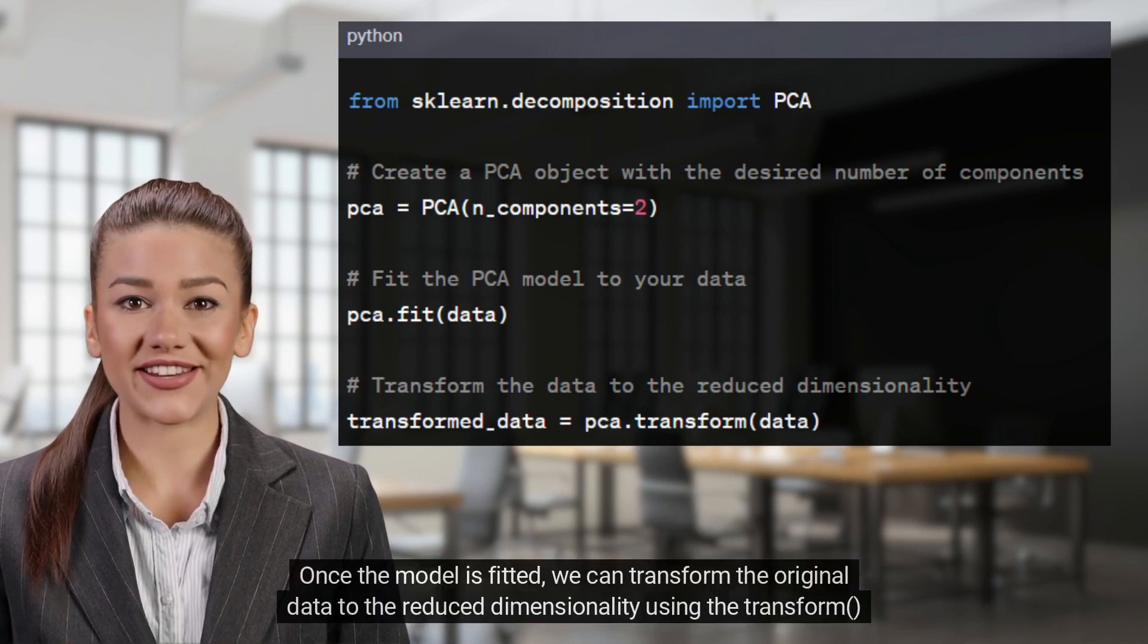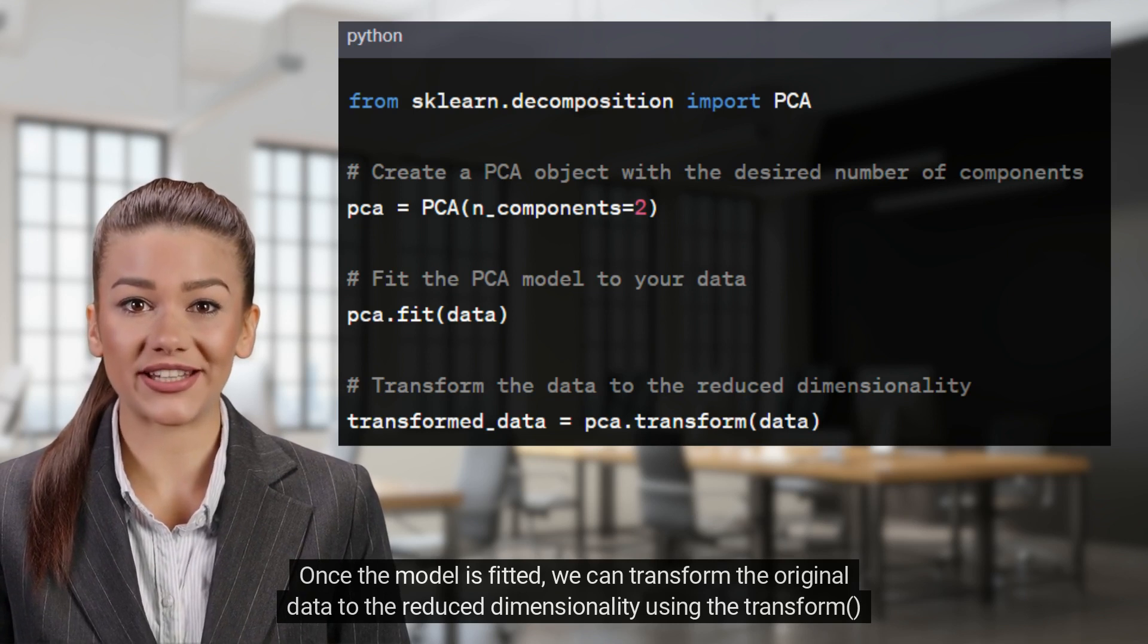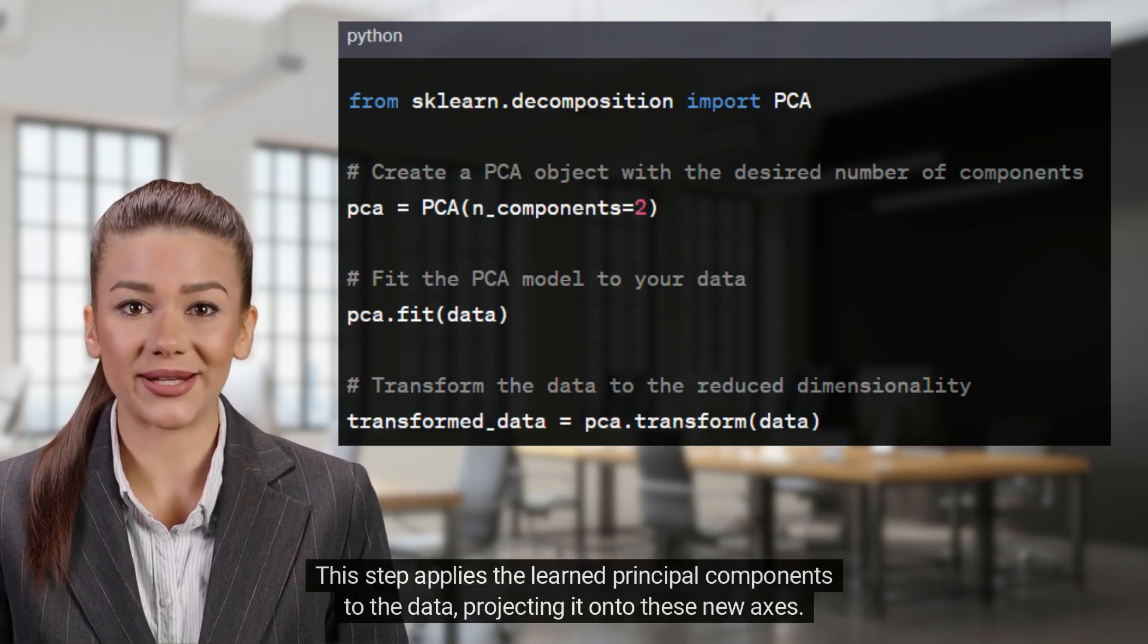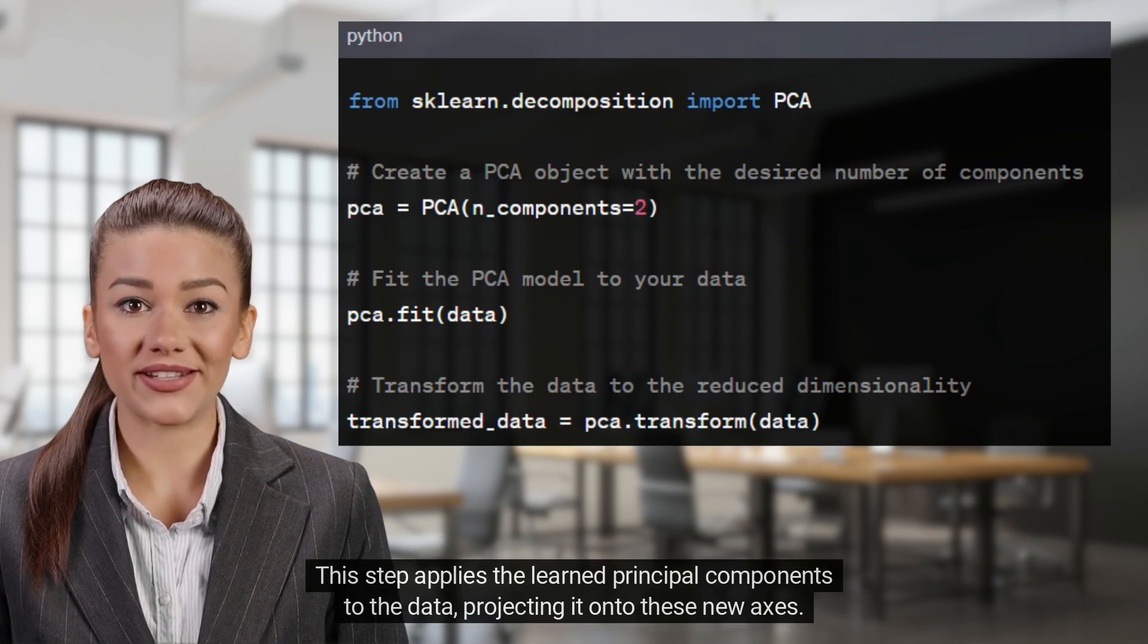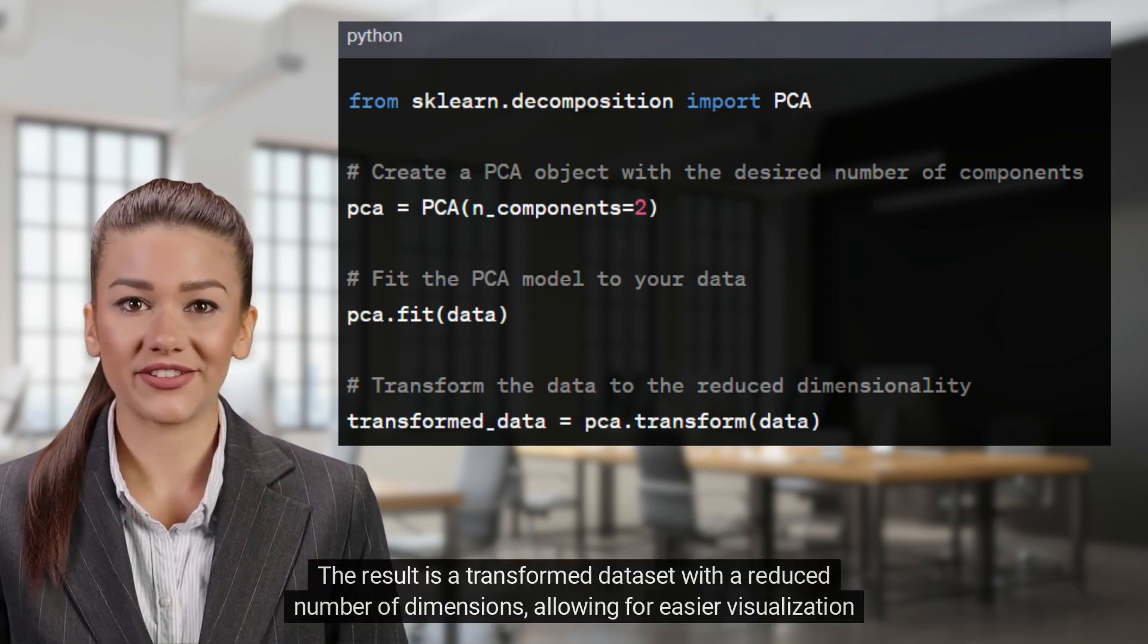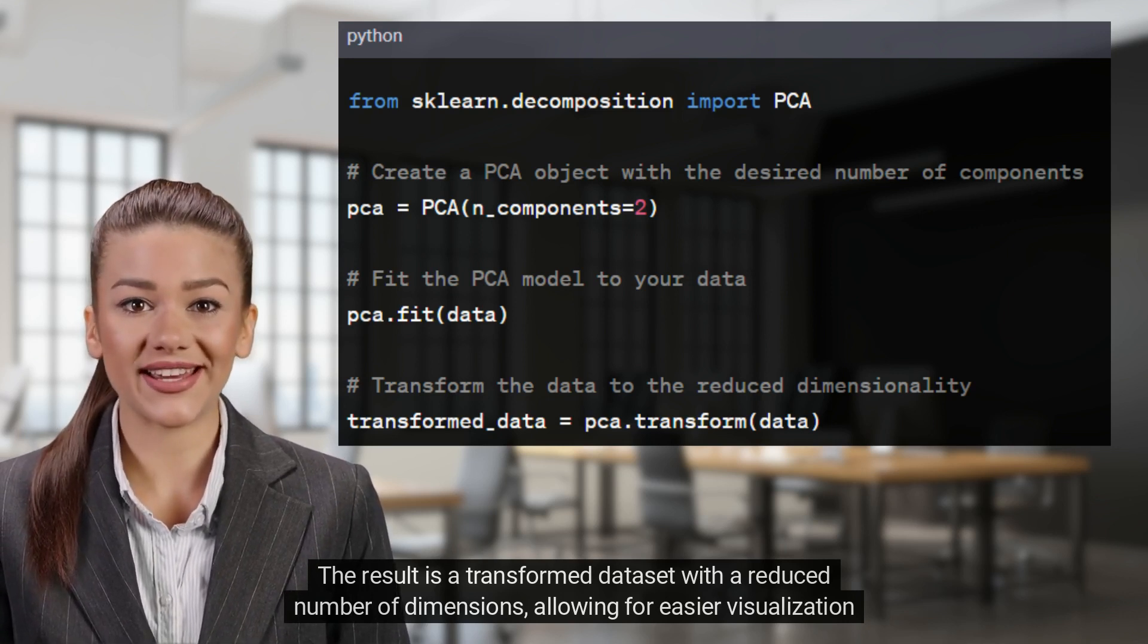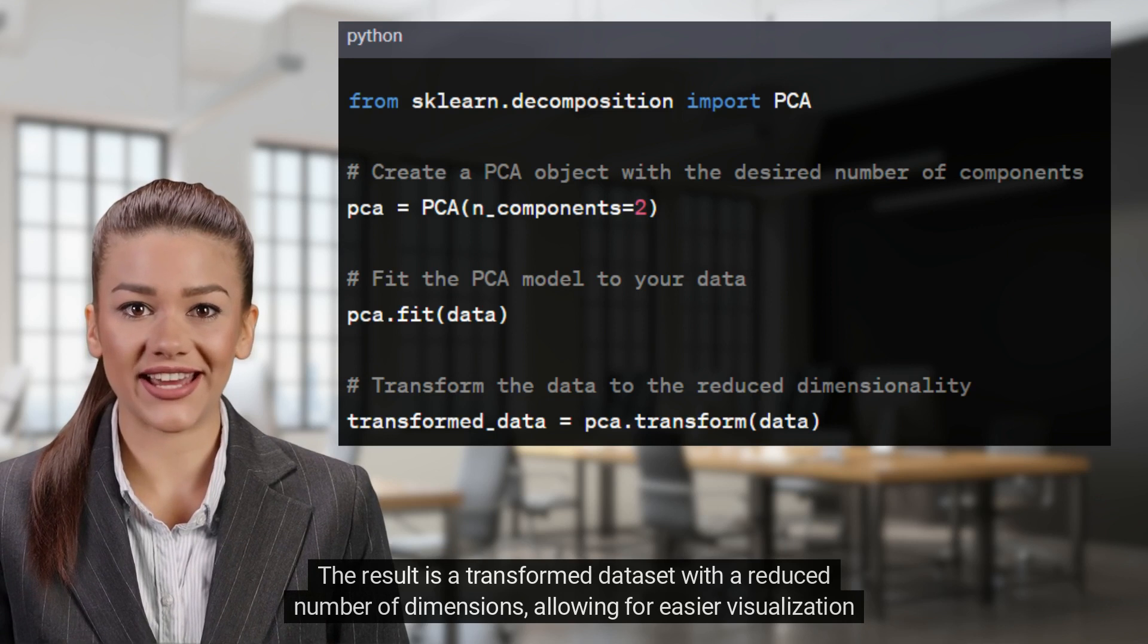Once the model is fitted, we can transform the original data to the reduced dimensionality using the transform method. This step applies the learned principal components to the data, projecting it onto these new axes. The result is a transformed dataset with a reduced number of dimensions, allowing for easier visualization and analysis.